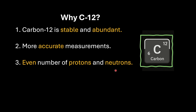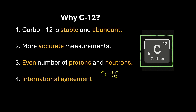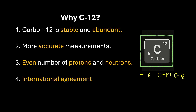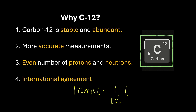These proton-proton and neutron-neutron pairs create lower energy and hence more stability. Next comes the international agreement. Before 1961, chemists used oxygen-16 as the reference while physicists used the average atomic mass of natural oxygen — oxygen-16, oxygen-17, and oxygen-18 — which led to many inconsistencies. In 1961, IUPAC adopted carbon-12 as the universal standard to unify all scientific communities, declaring that one AMU is one-twelfth the mass of the carbon-12 isotope.